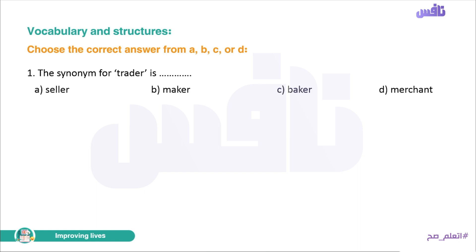Number one. The synonym for 'trader' — synonym means muradif, the equivalent word for 'trader'. Is it seller? No, a trader both buys and sells, not just a seller. Maker? No. Baker? No. The answer is 'merchant' — merchant means tagger (trader). So it is the correct answer.